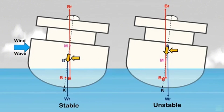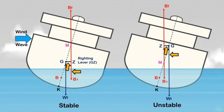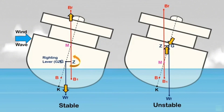As the weight force and buoyancy force become separated, a righting lever or righting arm is created, known as GZ. GZ, or righting lever, is the horizontal distance between the center of gravity G and the vertical line of action of the buoyancy force. In stable condition, there is a moment to return the ship to an upright position since the righting lever is created on the low side. The weight force acts vertically downward on the high side while the buoyancy force acts vertically upward on the low side, creating a moment of statical stability known as the righting moment.